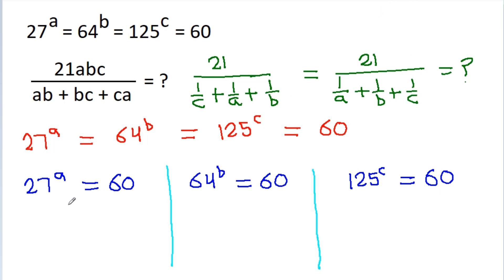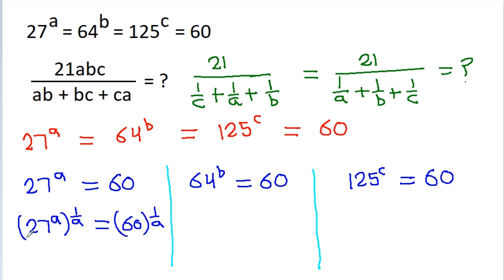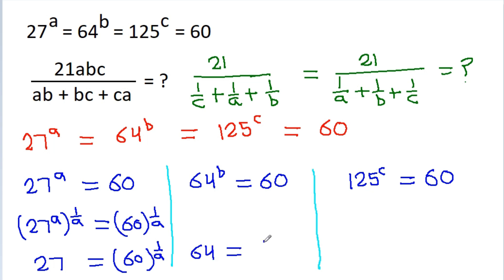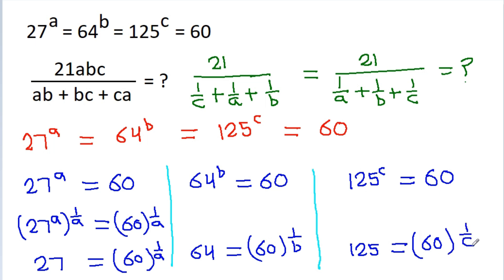From 27 to the power a equals 60, if we raise both sides to the power 1/a, then 27 to the power a times 1/a gives us 27 is equal to 60 to the power 1/a. Similarly, from 64 to the power b equals 60, we get 64 is equal to 60 to the power 1/b. And from 125 to the power c equals 60, we get 125 is equal to 60 to the power 1/c.